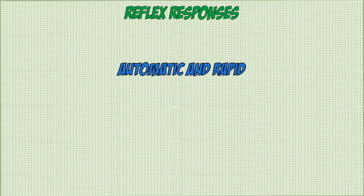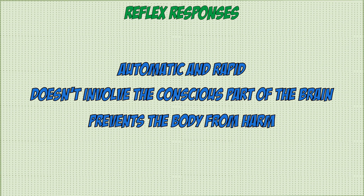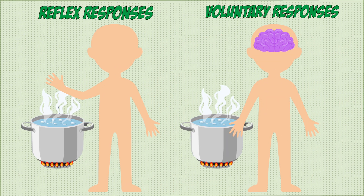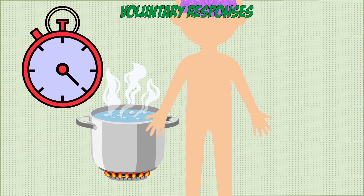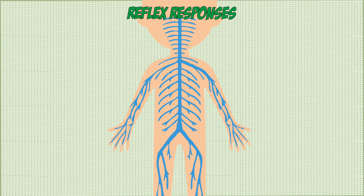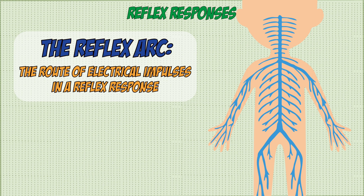The second type of response is a reflex response. These are automatic and rapid compared to a voluntary response, because they don't involve the conscious part of the brain — so time isn't taken processing the information and deciding how to respond. They're useful because they can prevent your body from harm by responding much faster. For example, if you touch something very hot and your hand withdraws, a fast automatic response is useful because a normal voluntary response would take longer, meaning your hand would be on the hot object for longer and possibly burn you more. This happens quickly because the route the electrical impulses take is different — this route is known as the reflex arc.